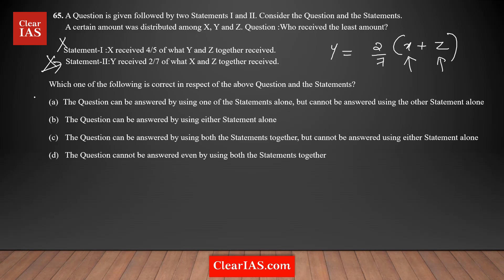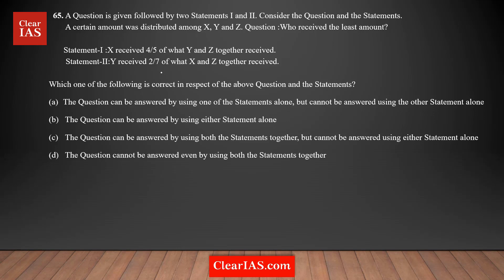At this stage, Option A is eliminated — that means the question can be answered by one statement alone but not the other, which is not true here. Option B is also eliminated. Now what we need to do is combine both statements and see whether we can get a unique answer. From Statement 1: X = (4/5)(Y + Z), and from Statement 2: Y = (2/7)(X + Z).